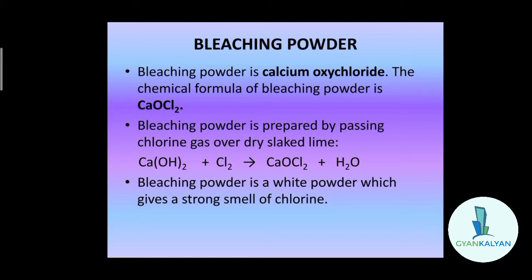Bleaching powder is prepared by passing chlorine gas over dry slaked lime. Chlorine gas is passed over dry slaked lime, and slaked lime is calcium hydroxide. So chlorine gas is passed over calcium hydroxide to produce calcium oxychloride, which is the bleaching powder. This chlorine gas can be obtained from the electrolysis of sodium chloride, which also gives sodium hydroxide and hydrogen gas. This chlorine gas is used to produce calcium oxychloride, and this is the preparation of bleaching powder.